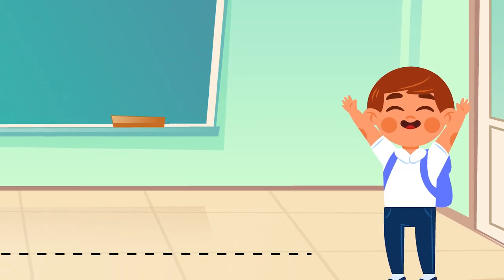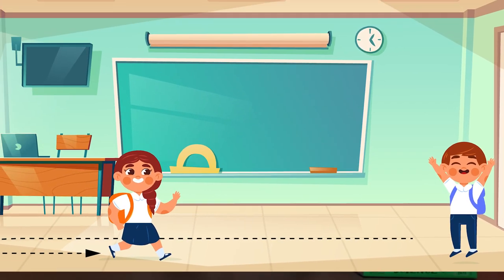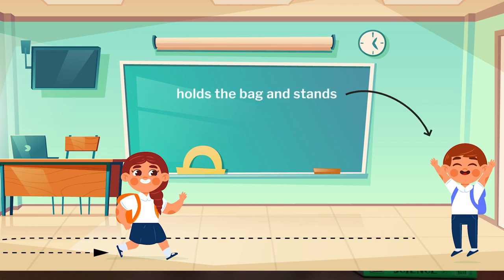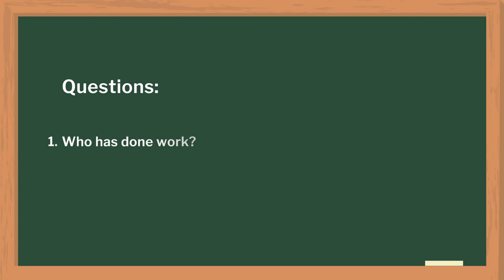This brings us to the interactive activity to introduce the physical concept of work. We need two volunteers with their bags. One student holds a school bag and stands in a fixed position. Another student holds a bag and walks to the end of the classroom and back. The class can discuss who has done work and who has not done work.